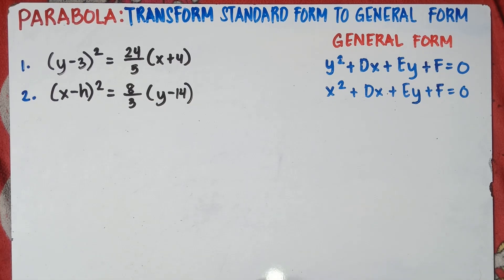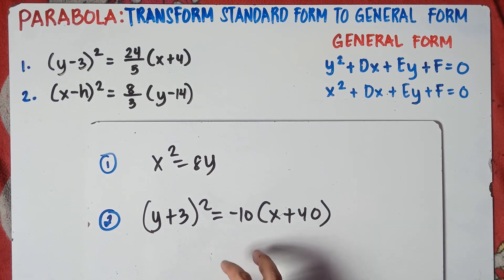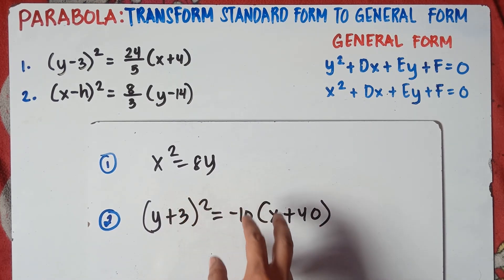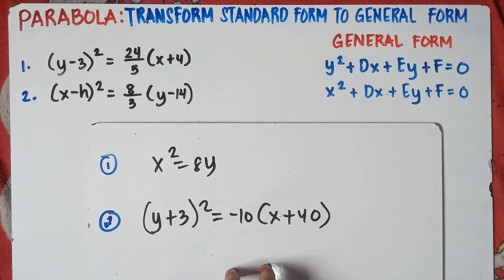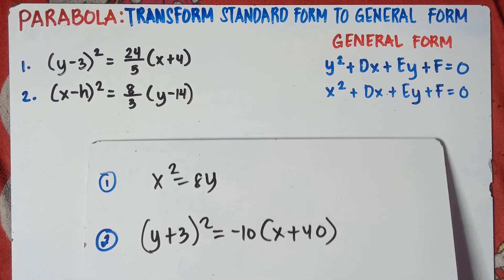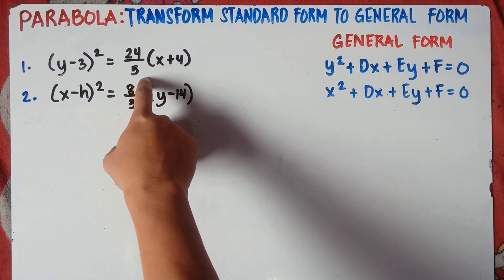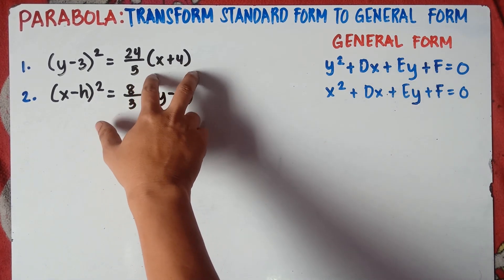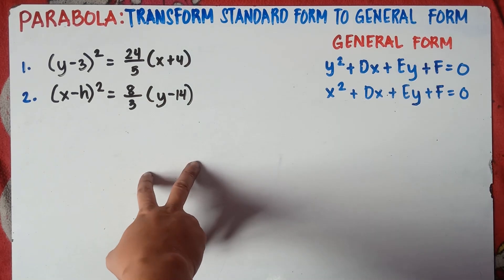This is already part 2 of our video class. In part 1, we saw basic examples of standard form — we have x squared equals 8y and similar equations. Feel free to see the link in the description below for part 1. It's better for you to see part 1 before solving part 2. This part 2 will be quite tricky since we have a fraction — the number before the quantity is a given fraction.